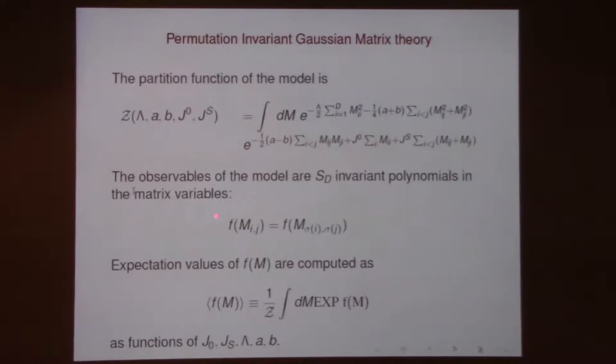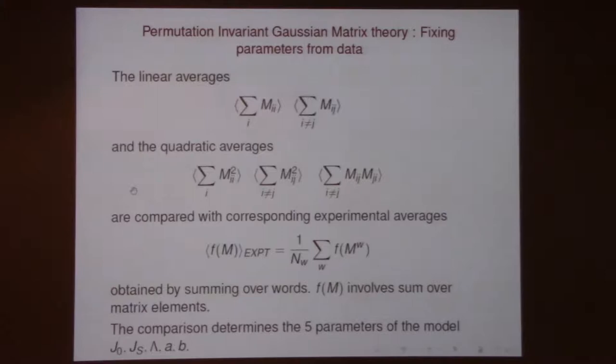You can take permutation-invariant functions of matrices and compute their correlators. Put that in this integral, divide by 1/Z, and you get an expectation value. You can compare this with an experimental expectation value: evaluate this function on a given word, sum over all the words, divide by the number of words — that's the experimental expectation value — and you try to see if your theory correctly reproduces these things.